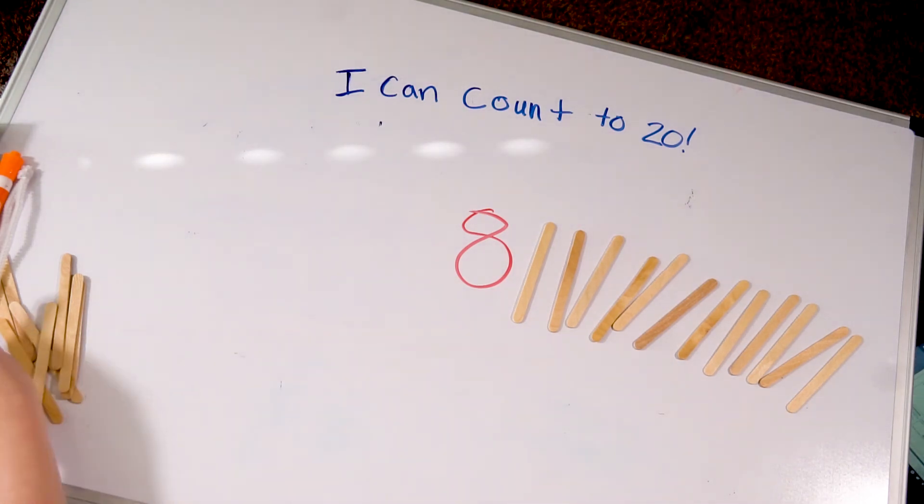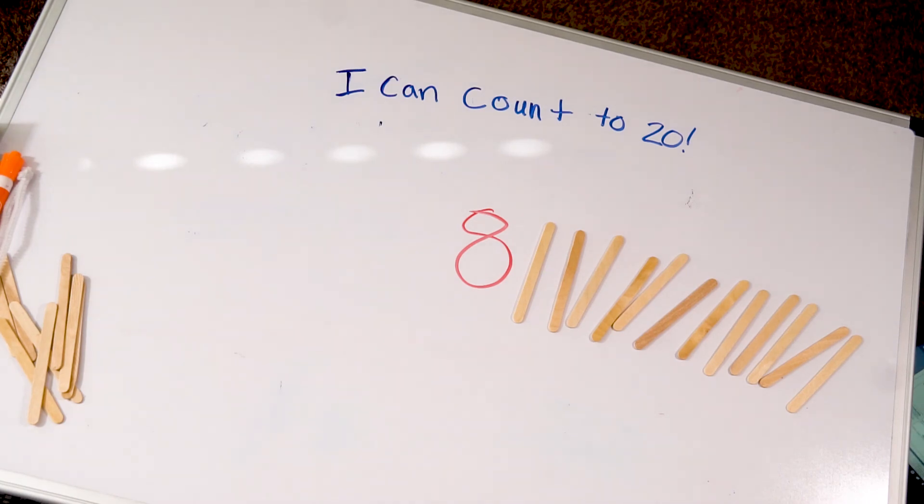This skill is called counting on. It means that you start at one number and you count forward from that number. You count on. Great job. Thank you for playing this game with me today. Thank you so much for joining me this week in our distance learning math. I'm so excited to see you and learn with you next week as well. Remember to keep writing and counting your numbers. I will see you later. Bye bye.